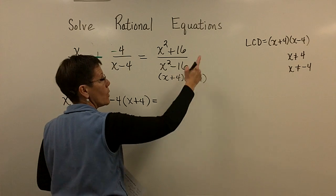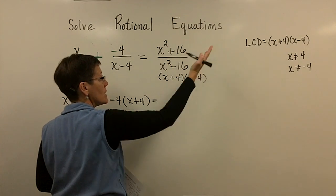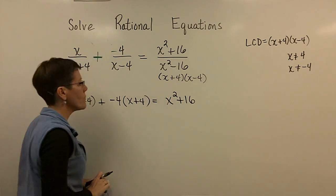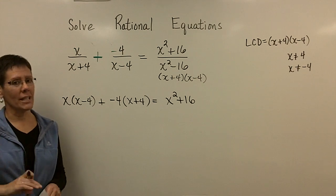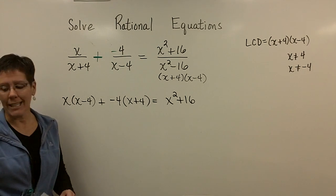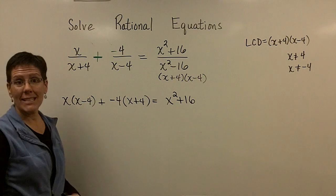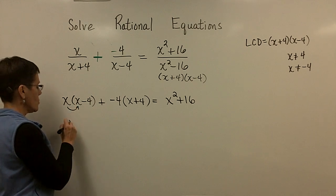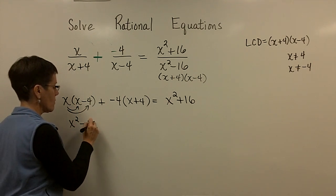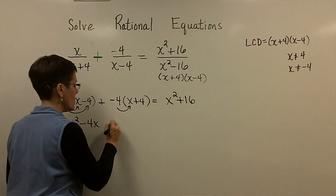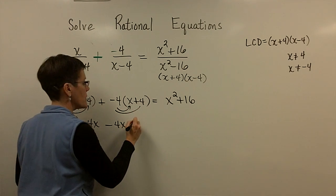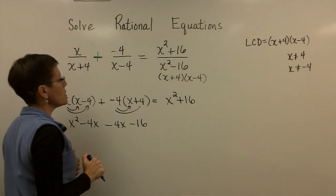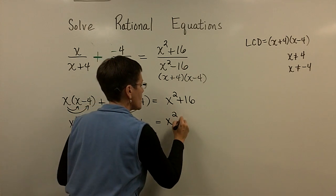Now, this has got an x minus 4 in the denominator, so the x minus 4s would cancel, and I need an x plus 4 times that. That's the piece that was missing. And over here, this denominator had both of those, so when I multiply this fraction by that full LCD, the whole denominator disappears, and I have just x squared plus 16. I have to distribute, and this is what sometimes people miss. They might not get the minus 16 if they haven't swiped that.